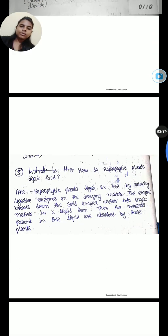Fifth question asks, how do saprophytic plants digest their food? Saprophytic plants digest food by releasing digestive enzymes on decaying matter. The enzymes break down the solid complex matter into simple matter in liquid form. Then the nutrients present in the liquid are absorbed by the plant. This is how your very short questions and answers gets completed.